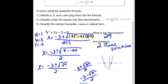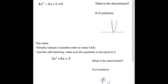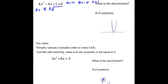Let's try another one. Our a value is 4, our b value is negative 4, and our c value is positive 1. So we have x equals the opposite of b — so positive 4 — plus or minus the square root of our discriminant. The discriminant is our b term squared, so negative 4 squared, minus 4 times our a value times our c value. The whole thing gets divided by 2 times our a value.